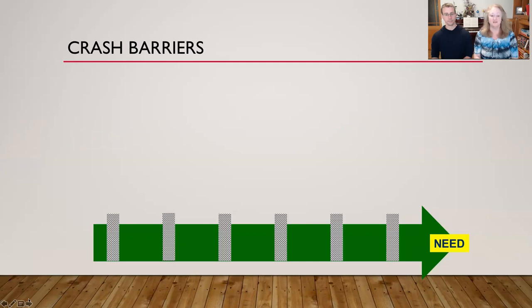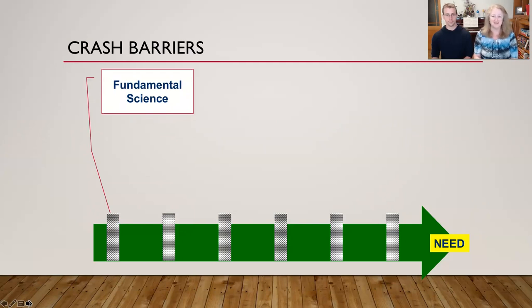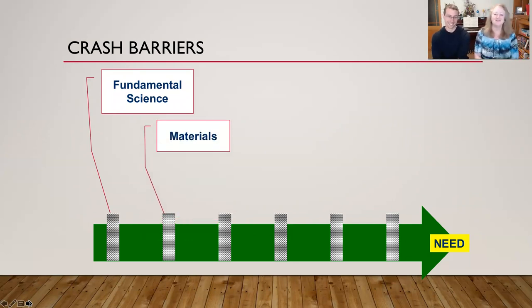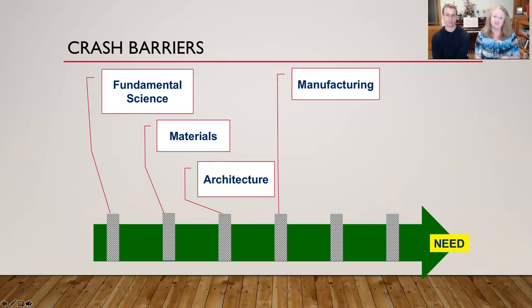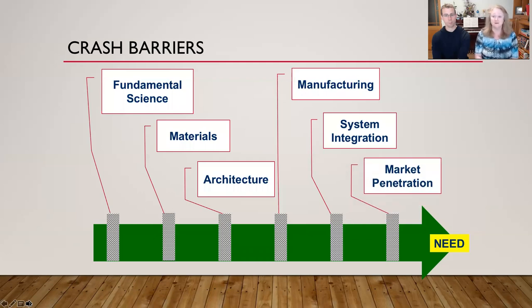Now let's see what the crash test setup is. We've got to look at the barriers. The first one is really fundamental science — if it doesn't get past that one, if you break physics, we can go have a coffee. Then we've got materials: are there fundamental materials issues we need to get past? And the architecture just means the design of the thing itself — are there any barriers there? Manufacturing: if it's going to be scaled up and rolled out, you've got to have the manufacturing for it. How does it integrate into the systems that already exist? And is there going to be a market for it once we get all those other hurdles over?